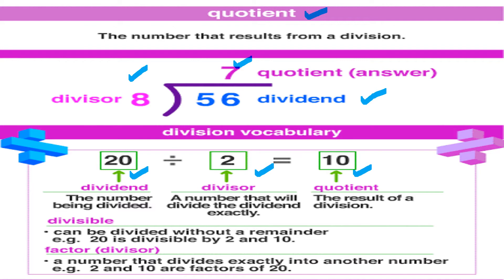Divisible means a number can be divided by another number without a remainder. For example, 20 is divisible by 2 and by 10, because 20 appears in both the 2 times table and the 10 times table. Therefore, 2 and 10 are factors of 20. A number that divides exactly into another number is called a factor or divisor.